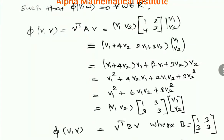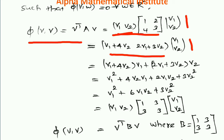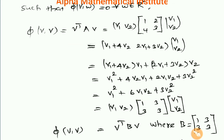Now we go for the third option, which says φ(V, V) equals V transpose BV for some symmetric matrix B. We need to establish the existence of such a symmetric matrix. By definition, φ(V, V) equals V transpose AV. Computing this: V transpose is the row vector (V1, V2), A is 1, 2, 4, 3, and V is the column vector (V1, V2). Multiplying gives V1² + 6·V1·V2 + 3·V2².